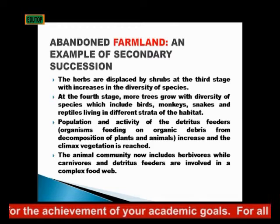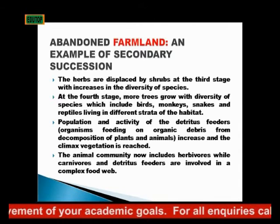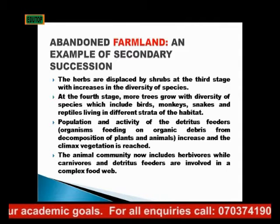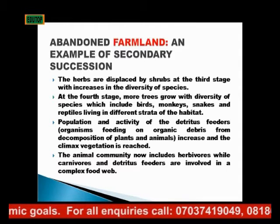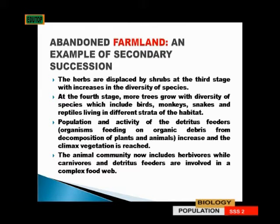Their activities increase on the land and the climax of the vegetation is reached. The animal community now includes herbivores, wild carnivores, and detritus feeders — saprophytes — all involved in a complex food web. That is a description of secondary succession, with the abandoned farmland as our example.